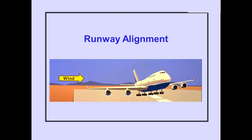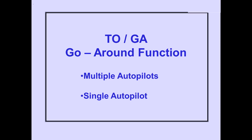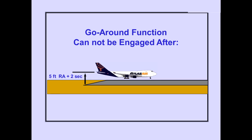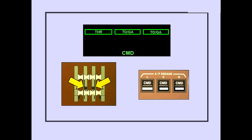Now let's discuss the go-around function of the TOGA mode. The go-around function can be used with multiple autopilots or with a single autopilot. The go-around function is armed by capturing the glide slope or when the flaps are out of up. The arming of the go-around function is not shown on the PFDs. During descent, the go-around function disarms and cannot be engaged 2 seconds after passing through 5 feet radio altitude. Pushing the TOGA switch engages the TOGA mode. The PFD displays thrust for autothrottle, and TOGA for roll and pitch. All three autopilots remain engaged. The FMC provides thrust required up to full go-around thrust to maintain a 2,000 foot per minute rate of climb.